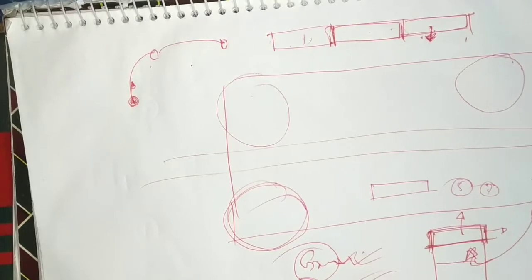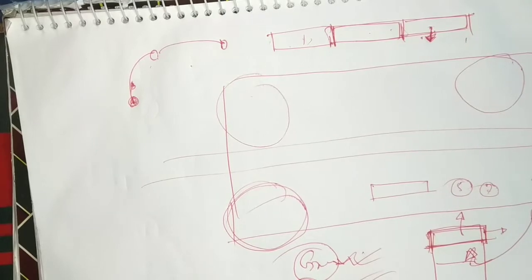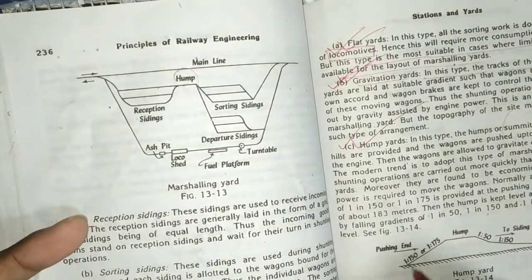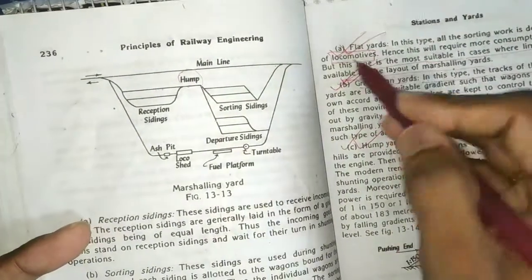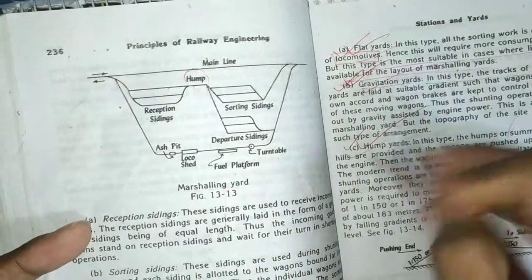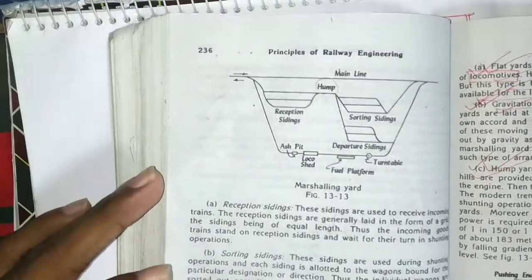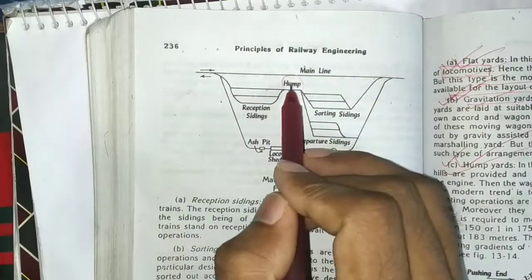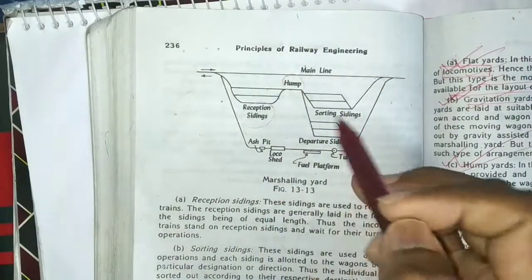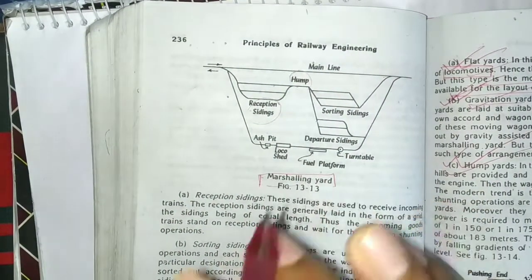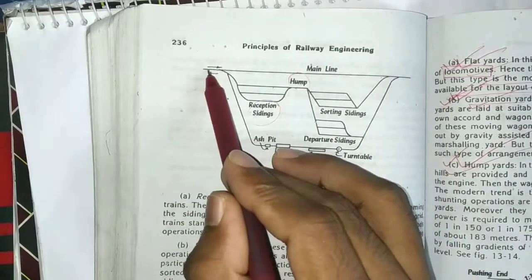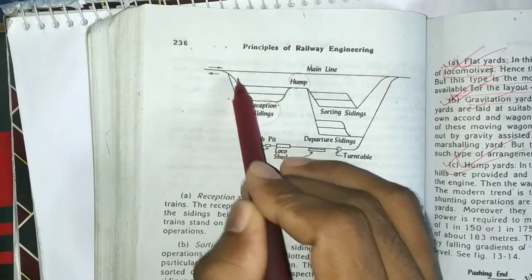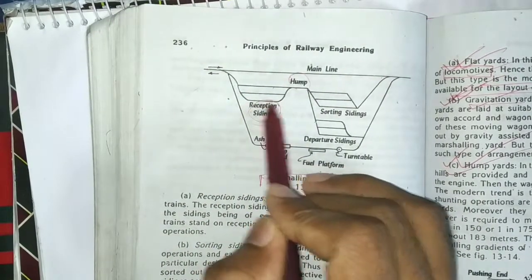The gravitational yard and the flat yard are two types of marshalling yards. If you can see the figure, you can see how gravity is used. There is the reception side, the marshalling area, and a dispatch side.